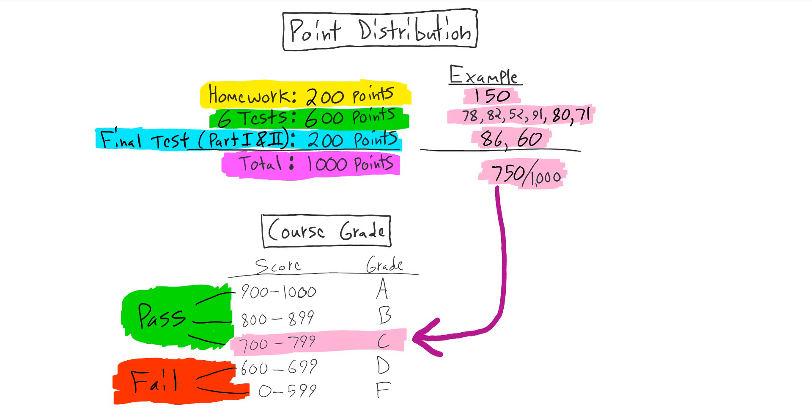It's pretty simple. As you can see, we have 200 points for homework, and we have 600 points for the six tests, 100 points each. And there were two parts to the final exam. Each part was worth 100 points for a total of 200 points. So all that adds up to 1,000 points. Now, some people might say, wait a second, how do I calculate my grade for the homework?